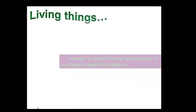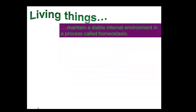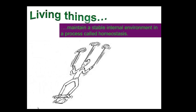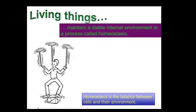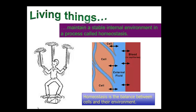Living things maintain a stable internal environment in a process called homeostasis. Homeostasis is a balanced or steady state needed for life — the balance between cells and their environment. In order to maintain homeostasis, organisms will regulate things like body temperature, blood volume, and pH balance.